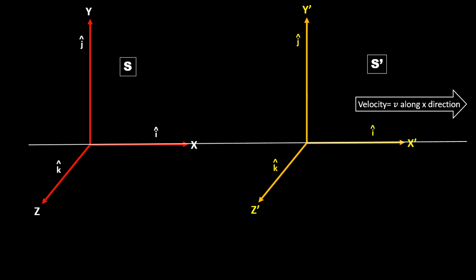The relation between these two frames is governed by a factor gamma, where gamma equals 1 divided by the square root of (1 minus v² / c²), where c is the velocity of light. We will now see how gamma governs the relation between the two frames.